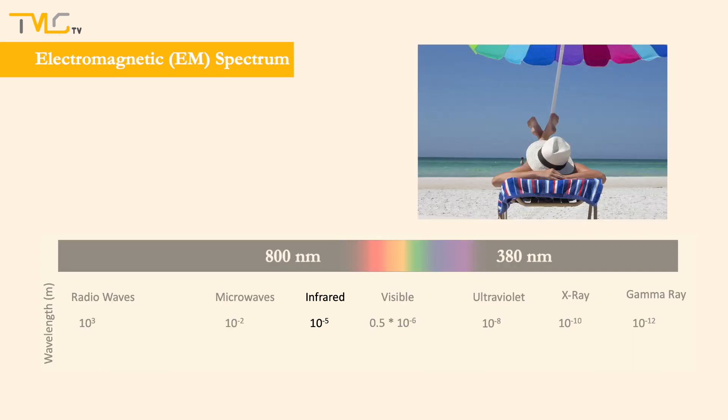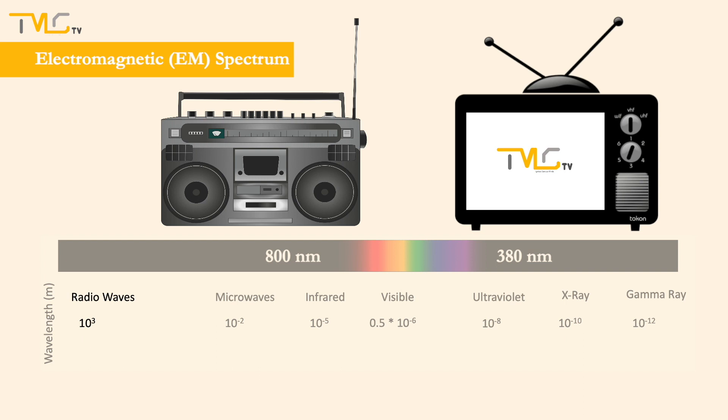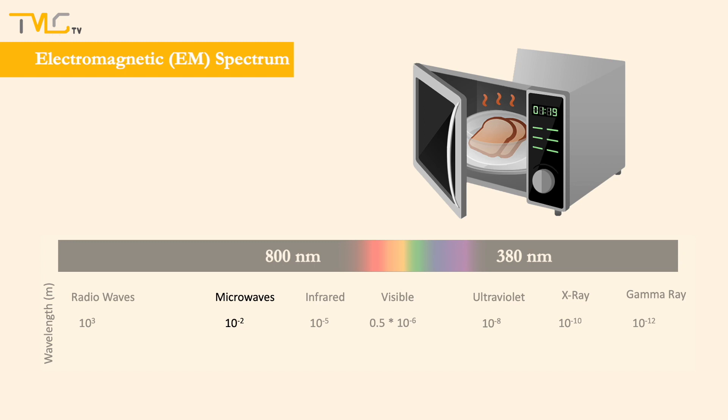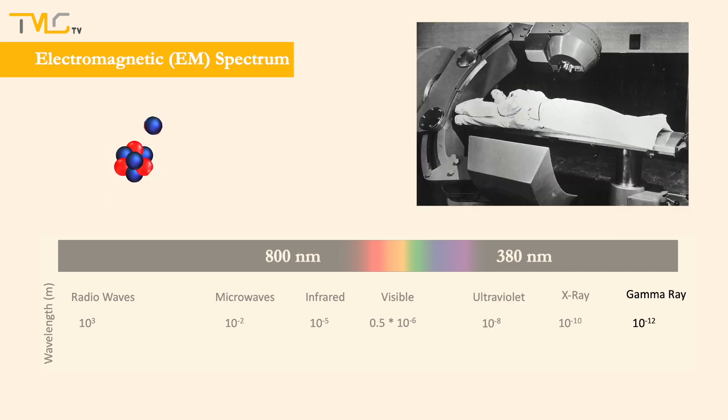For instance, we can detect IR through the warmth we feel through our skin, or our TV and radio antennas can collect radio waves and convert them into sound waves or motion pictures. Microwaves can be used for heating food, and UV is employed by dentists for disinfecting tools and curing composite fillings. Gamma rays are used for radiotherapy.